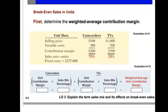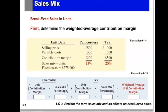Now that we have the sales mix, the next step is to determine the weighted average contribution margin. We take the contribution margin for camcorders, which is $200, times the percentage 0.75, plus the contribution margin for TVs, which is $500, times the percentage 0.25. The answer is a weighted average unit contribution margin of $275.